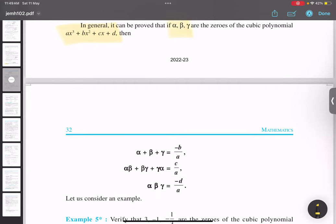Yes, so sum of zeros is this, minus b by a, just like sum of zeros in quadratic. This is called sum and product both, and this is only called product.